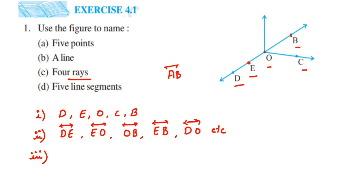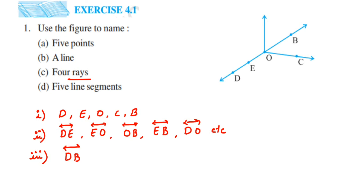They are asking us to write four rays. We can take ray DB — D is the starting point and from B it can be extended. So DB is one example. Same way, we can write ray EB, where E is the starting point and B is the point that can be extended. Next you can write OB, and then OC — O is the starting point and towards C it is extending. So the four rays are DB, EB, OB and OC.